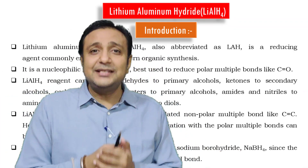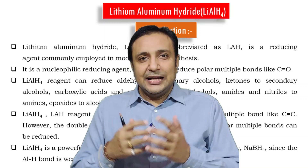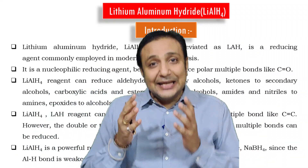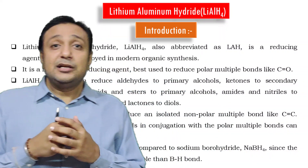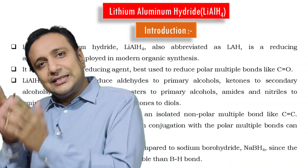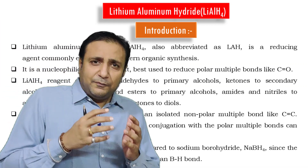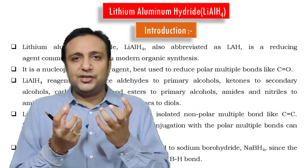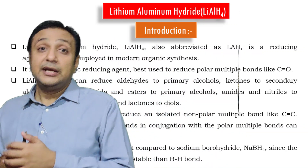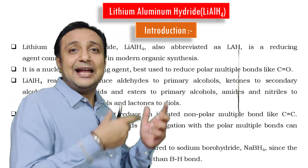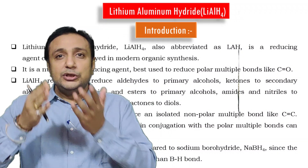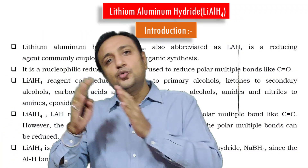The first reagent is lithium aluminium hydride, also abbreviated as LAH. It is one of the best reducing agents in organic synthesis. It is a nucleophilic reducing agent and is best used to reduce multiple C=O bonds. It can reduce aldehydes to primary alcohols, ketones to secondary alcohols, carboxylic acids and esters to primary alcohols, amides and cyanides to primary amines, lactones to diols, and epoxides to alcohols.